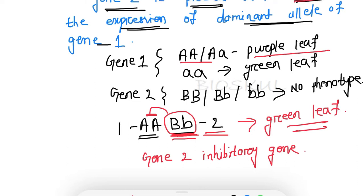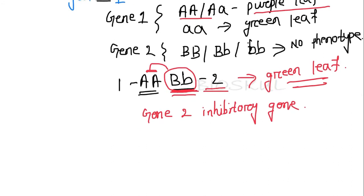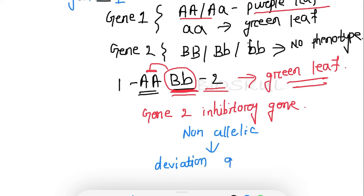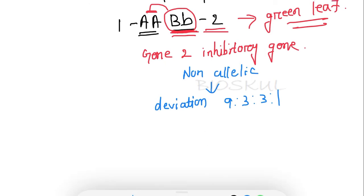I will explain why it is also called dominant recessive gene interaction at the end of this session. Now we need to find out the phenotypic ratio of inhibitory gene interaction. Inhibitory gene interaction is a type of non-allelic gene interaction, which means it will lead to a deviation from the F2 dihybrid phenotypic ratio of 9:3:3:1.